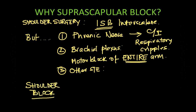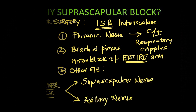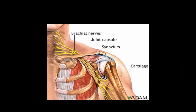The shoulder block constitutes blocking two nerves that have major sensory supply to the shoulder. This is the suprascapular nerve, which comes from the upper trunk, and the axillary nerve, which is the terminal branch. Let's have a closer look at the brachial plexus and its relationship with different anatomical structures in the chest and the upper limb.